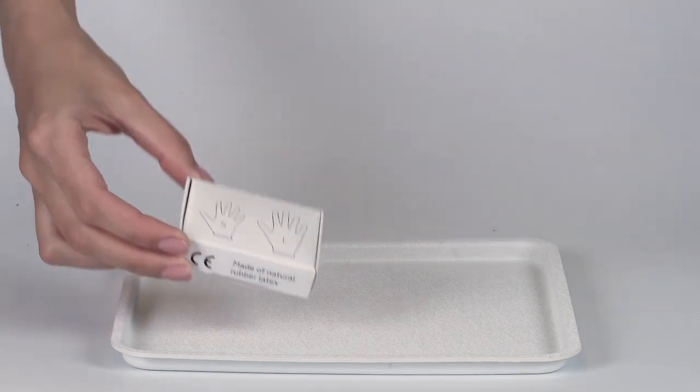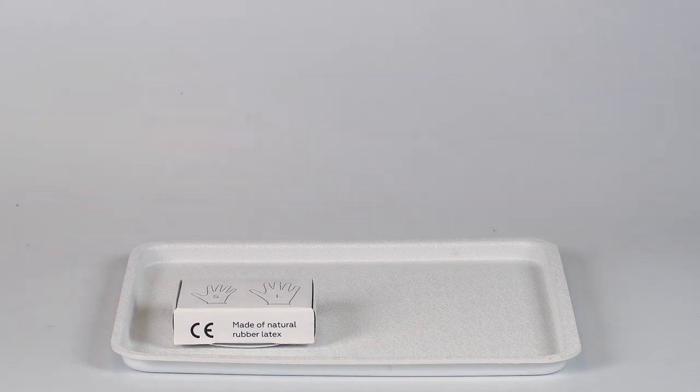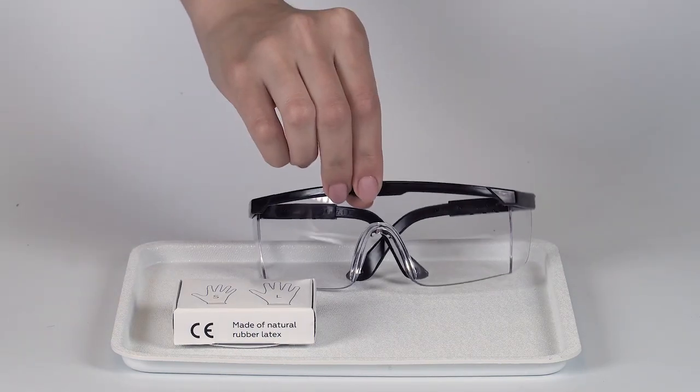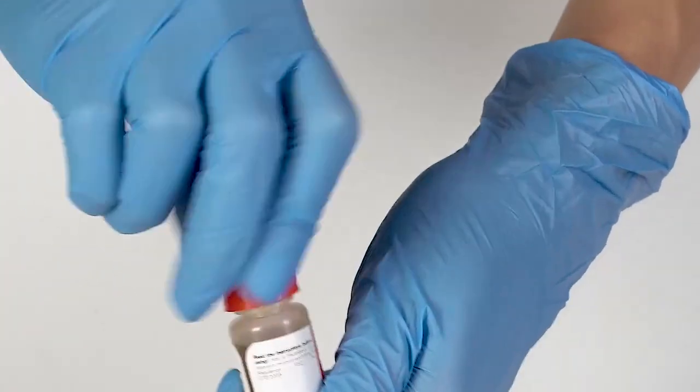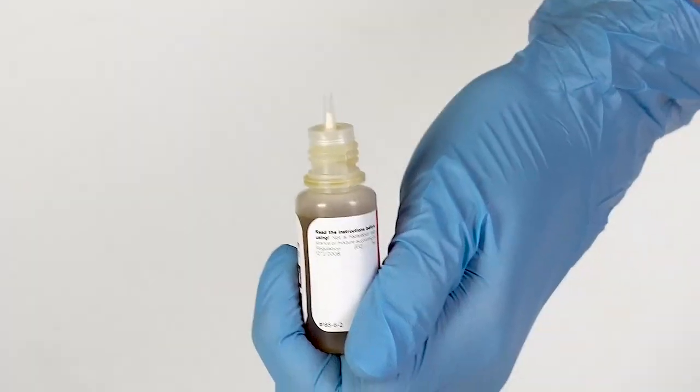Perform this experiment on a plastic tray to contain any possible spills. Don't forget to put on protective gloves and goggles before doing the experiment. To open a bottle containing a reagent, push the cap down and turn it.